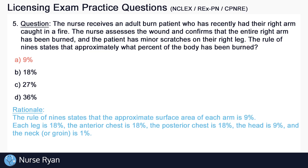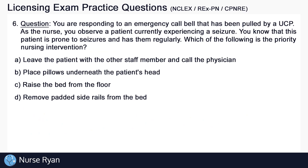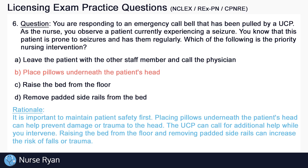Question six: you are responding to an emergency call bell pulled by a UCP. As the nurse, you observe a patient currently experiencing a seizure. You know this patient is prone to seizures and has them regularly. Which of the following is the priority nursing intervention? The answer is B — place pillows underneath the patient's head. It is important to maintain patient safety first. Placing pillows underneath the patient's head during a seizure can help prevent damage or trauma to the head.